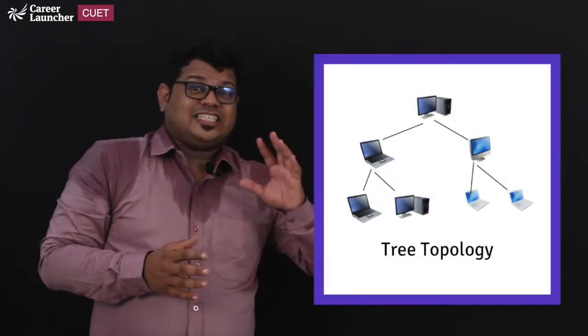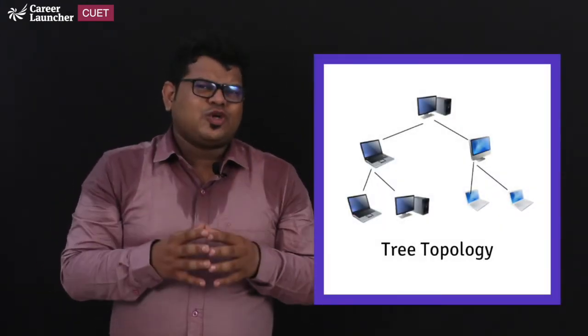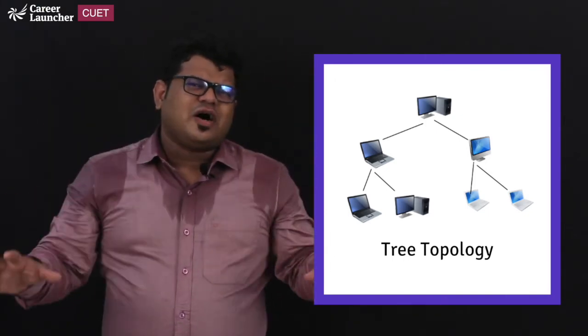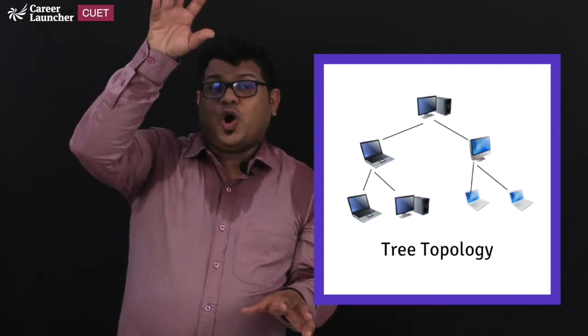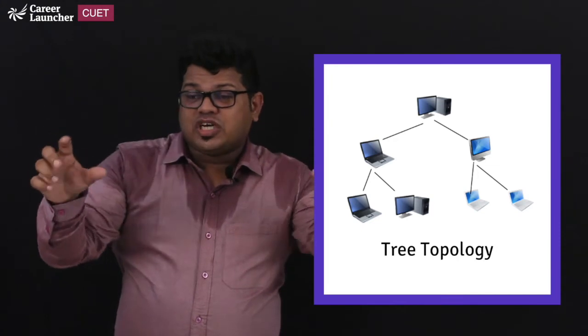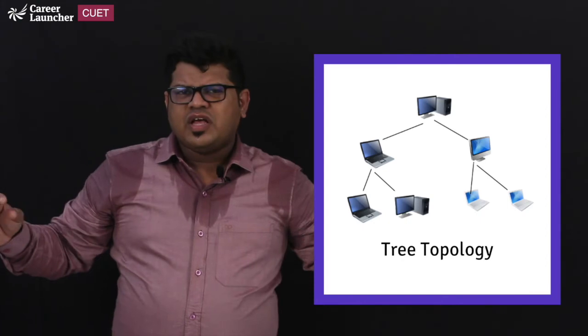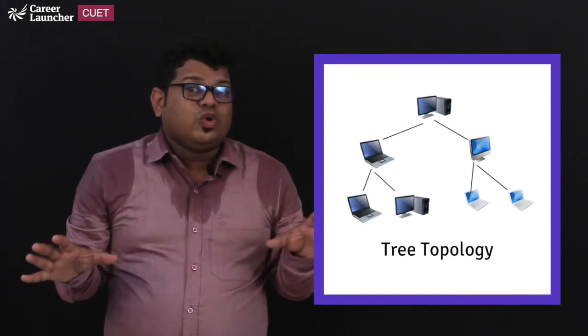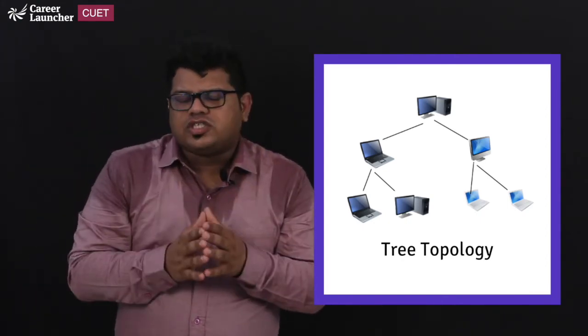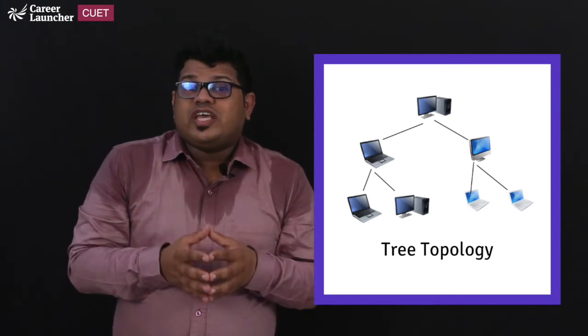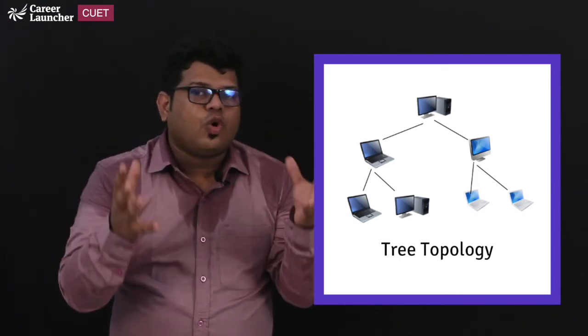Next coming to the tree topology. So in tree topology it is going to go like branches. So first a host and again there comes two different computers connected to it. Then again two two under these. So this is a simple example that we could take for a tree topology or otherwise even we could consider a hybrid topology.